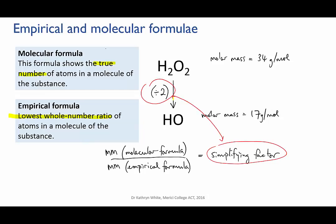So if you can find out the molar mass of the molecular formula and the molar mass of the empirical formula, then you can find out the simplifying factor. And that would then allow you to turn the empirical formula back into the molecular formula and discover what the compound was.